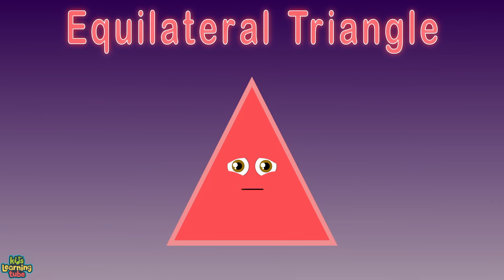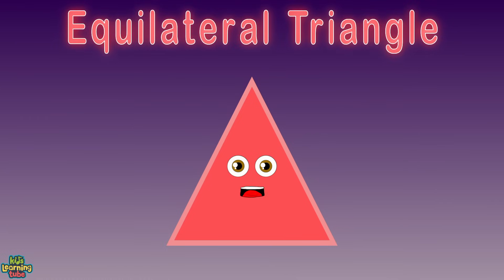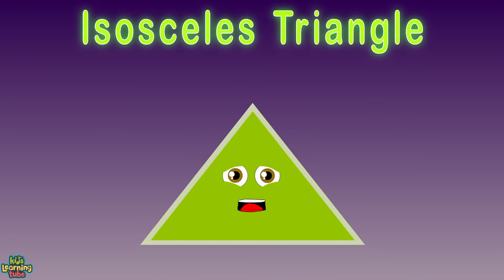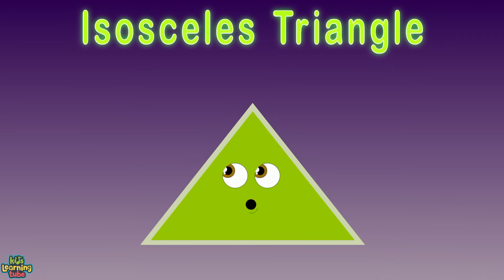...what does that mean? All three of my sides have the same length. You can clearly see I'm an isosceles triangle. Let me tell you what that is — I'm a triangle with two sides the same length.